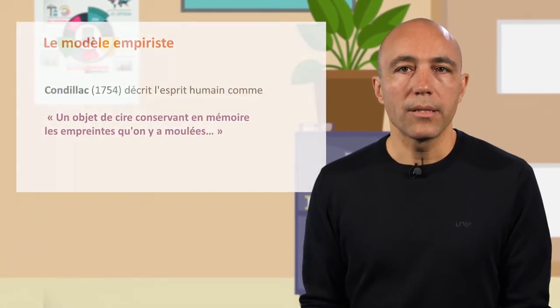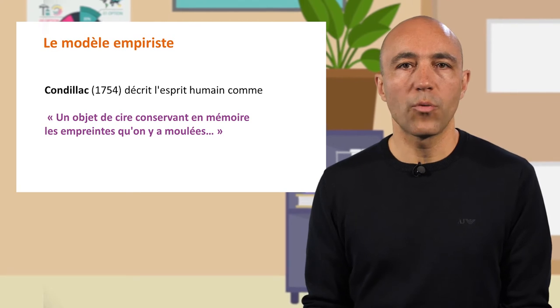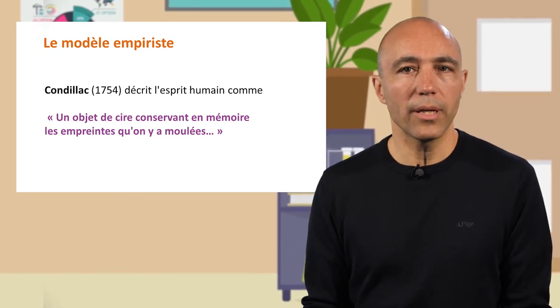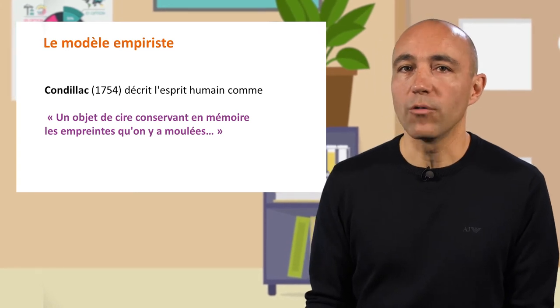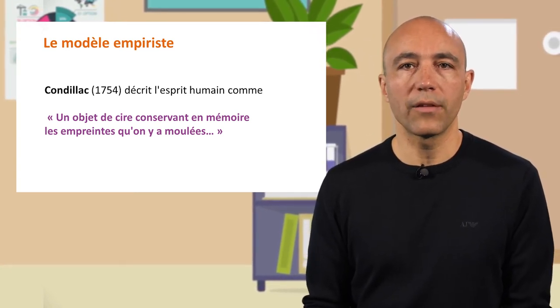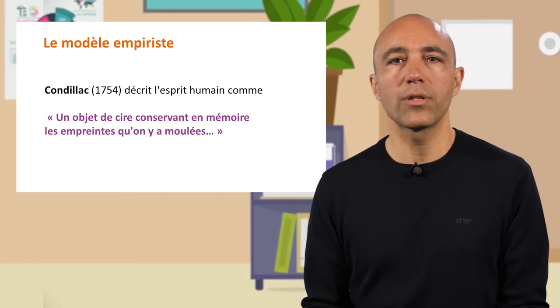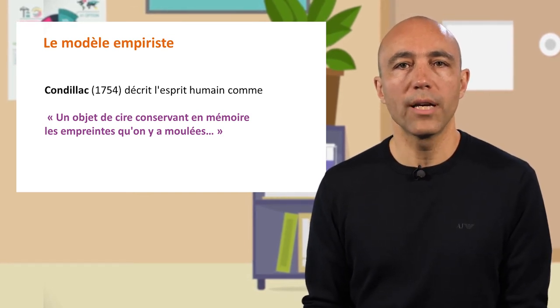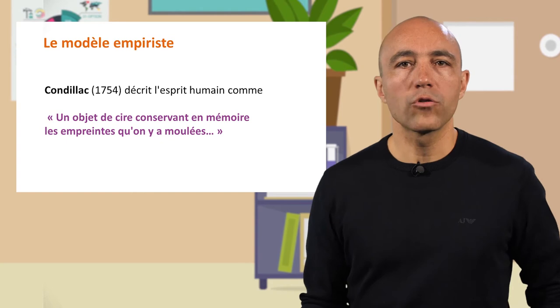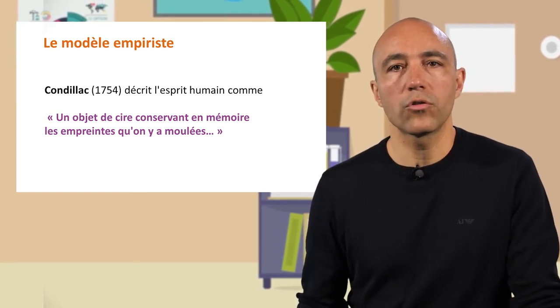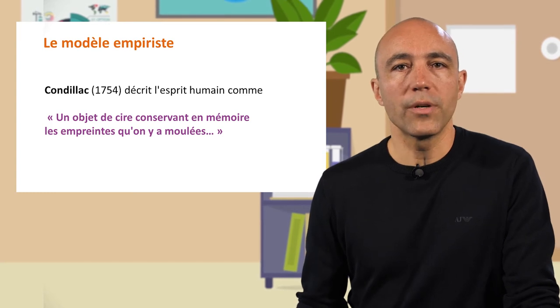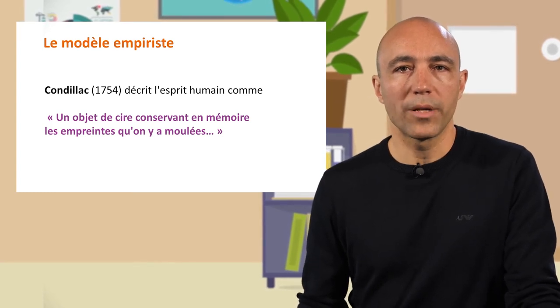Le premier modèle est dit empiriste. Il s'appuie sur l'idée que l'apprentissage procède par des processus d'imprégnation et de mémorisation. C'est le plus naïf de tous, et le plus ancien aussi. En 1754 déjà, Kondiak décrivait l'esprit humain comme un objet de cire conservant en mémoire les empreintes qu'on y a moulées. On parle dans ce cas également de modèles transmissifs, car le livre, le cours magistral ou la conférence sont les seules pédagogies que l'on peut imaginer décliner à partir de cette représentation de l'apprendre.